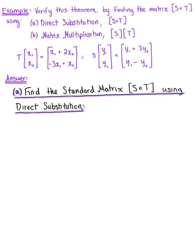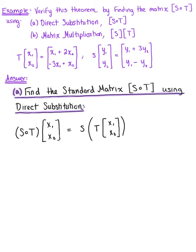Let's break this down. We have S of T of the vector (x₁, x₂). We can rewrite this as S of T(x₁, x₂). Looking at our defined linear transformation T, we can equivalently write this as S of (x₁ + 2x₂, −3x₁ + x₂).